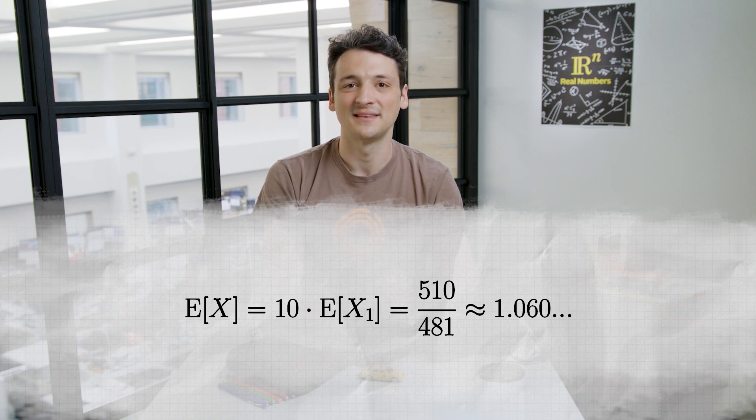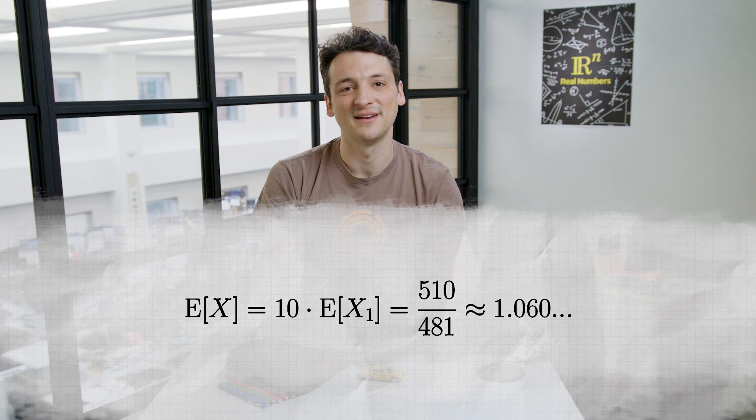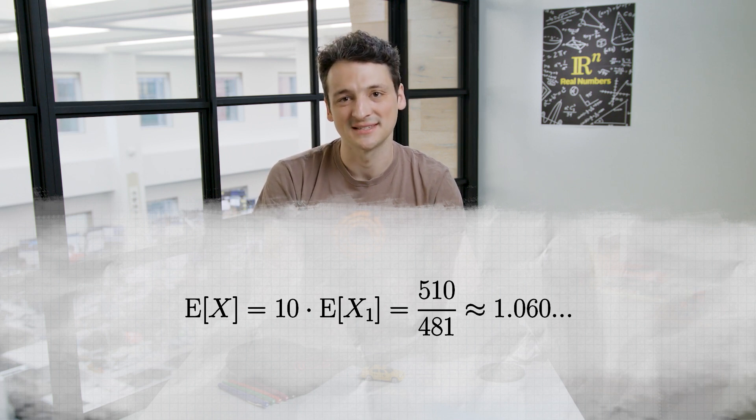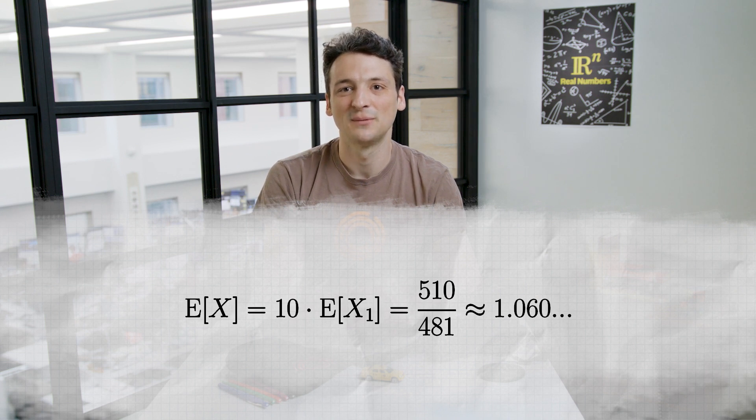Note that in this case, the indicator variables we are summing over are not independent. Whether one row is instep subtly changes the chances that another row is instep. We can prove this to ourselves by noting the following.